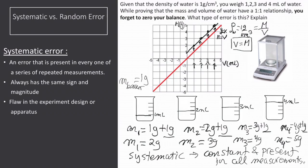Systematic errors cannot be removed by averaging out your measurements. To remove them, you must be able to identify them, know their magnitude and direction, and then subtract it from your measurements. Sometimes this can be hard to identify, but it is the only way to get rid of these errors.